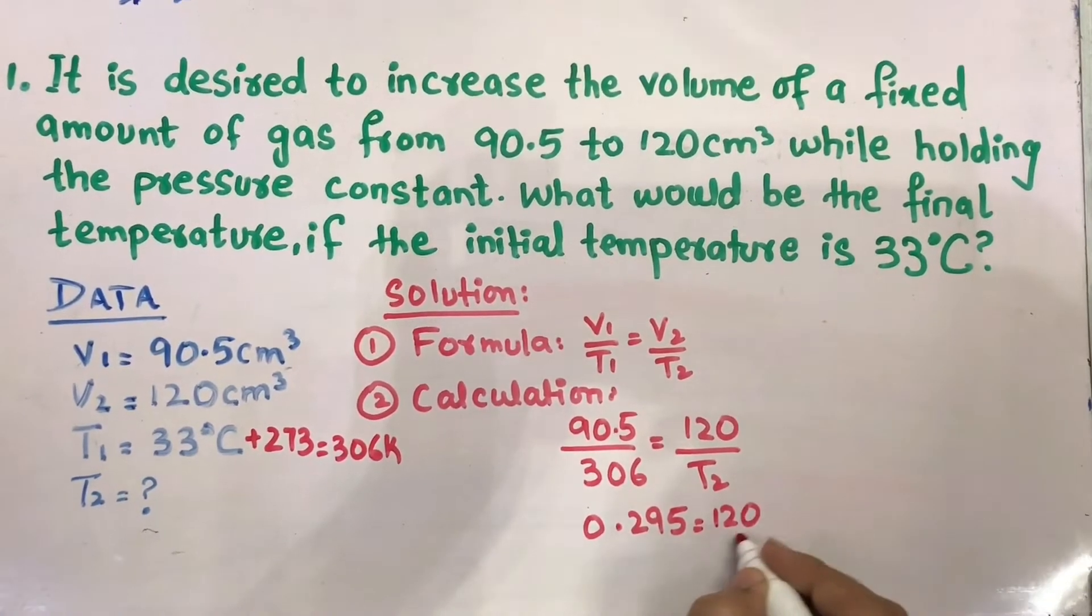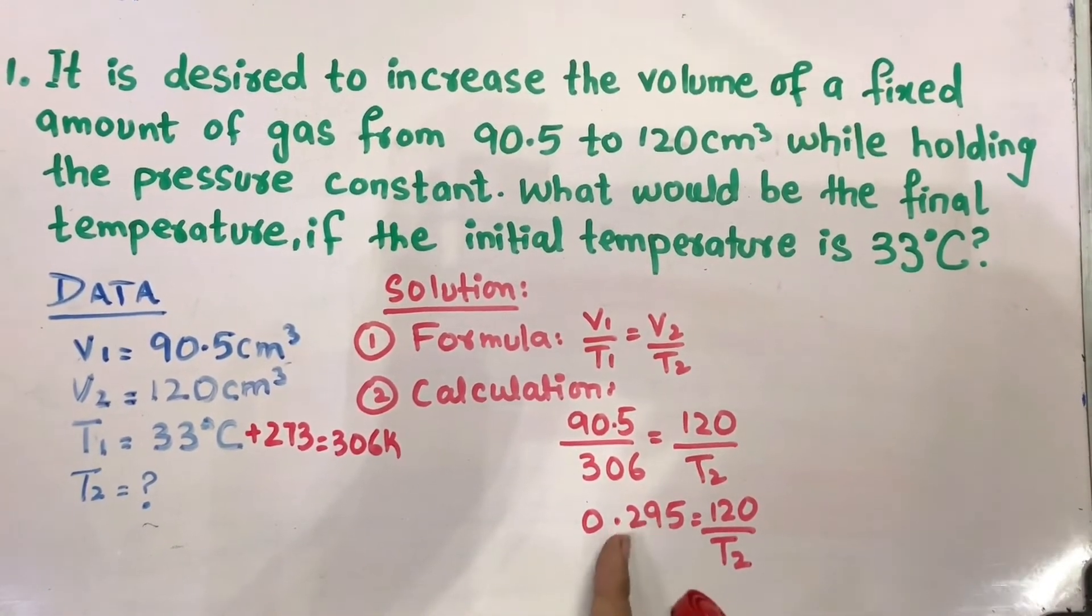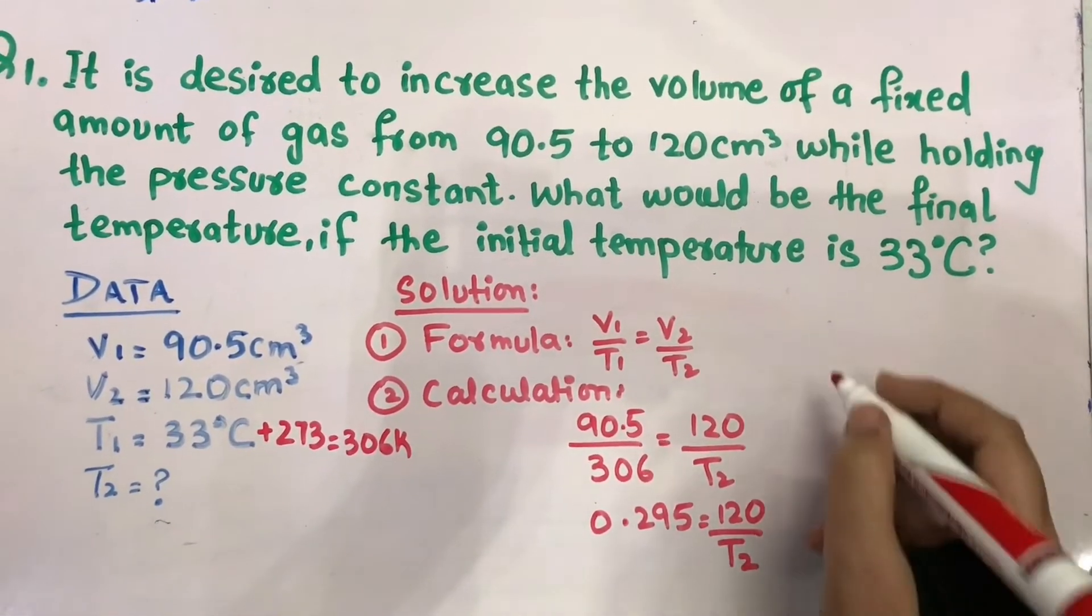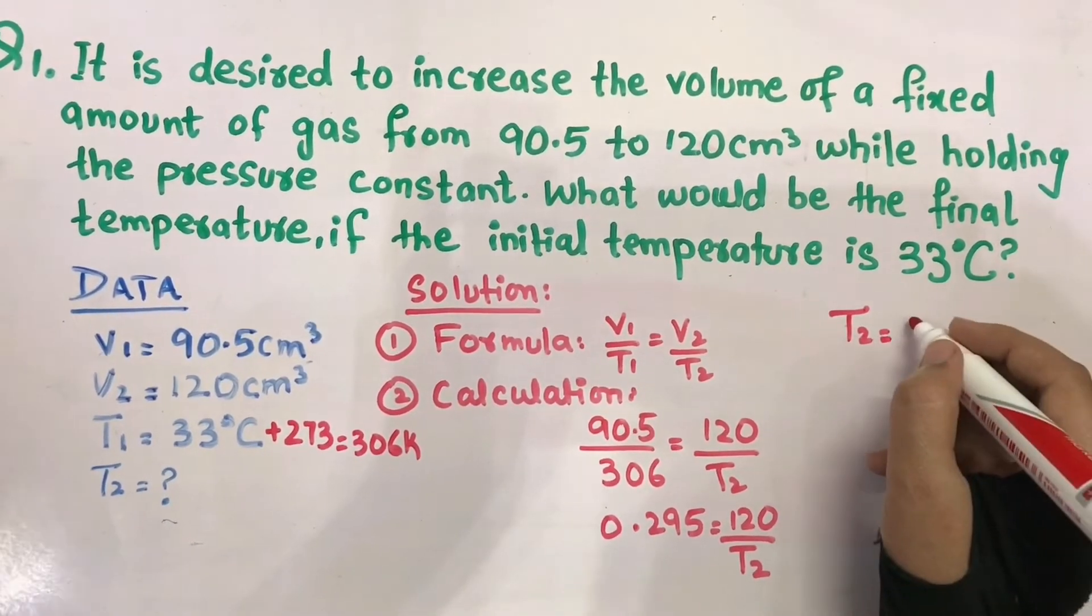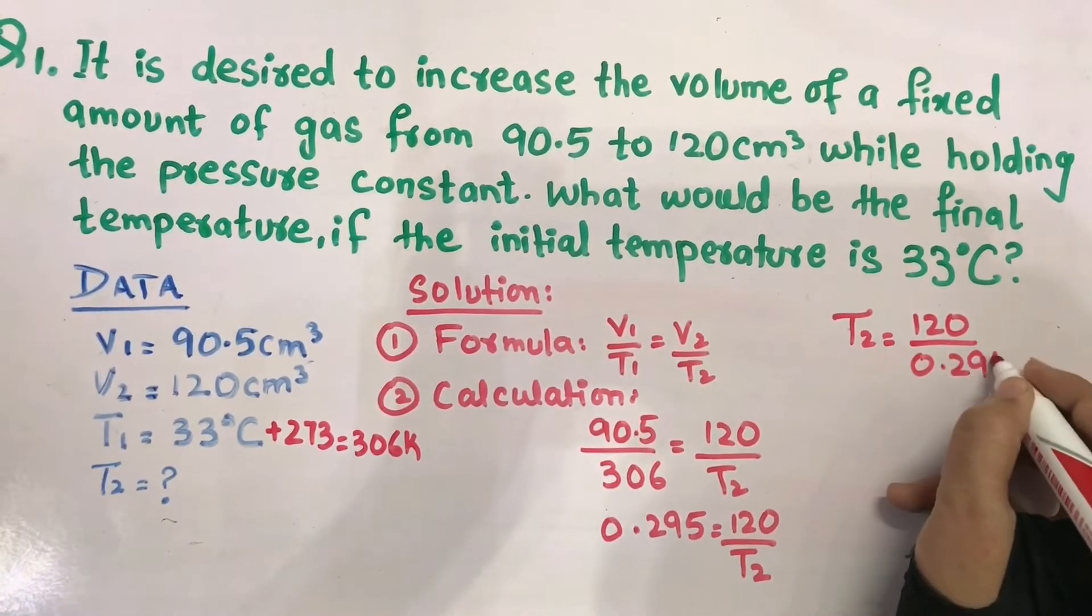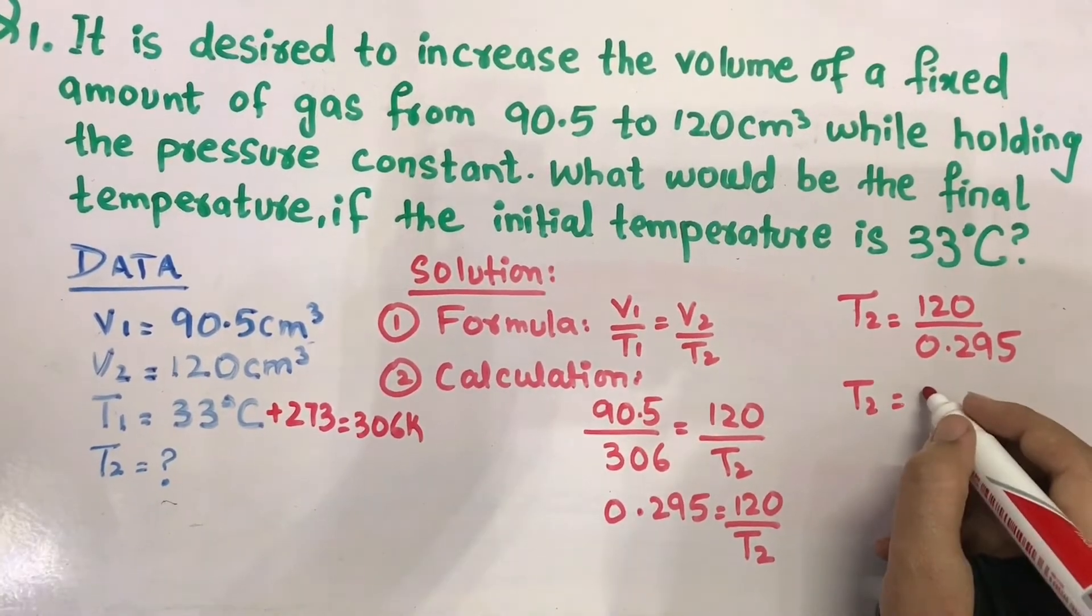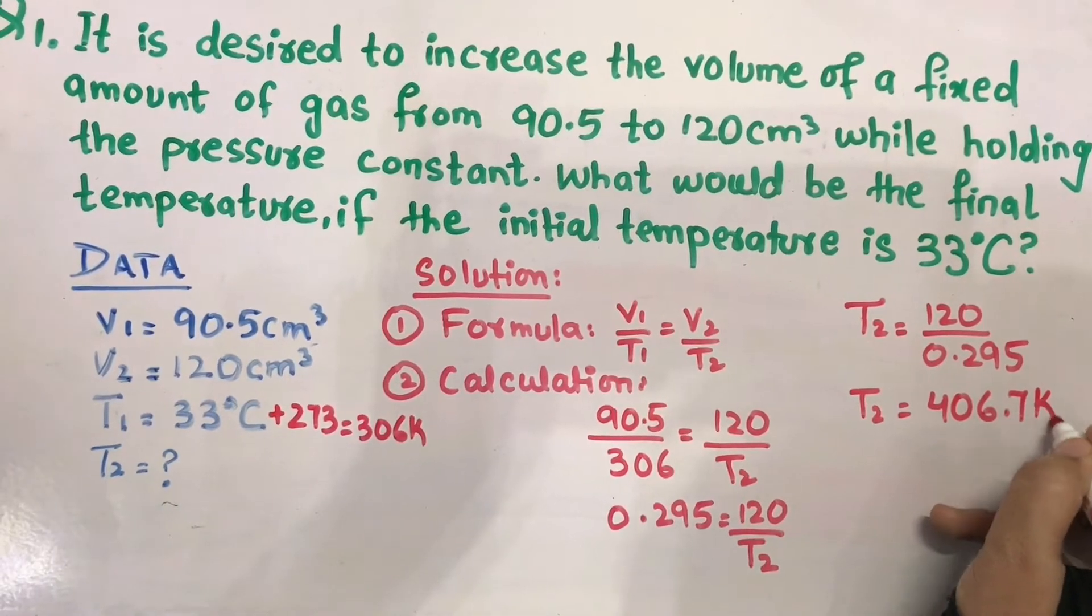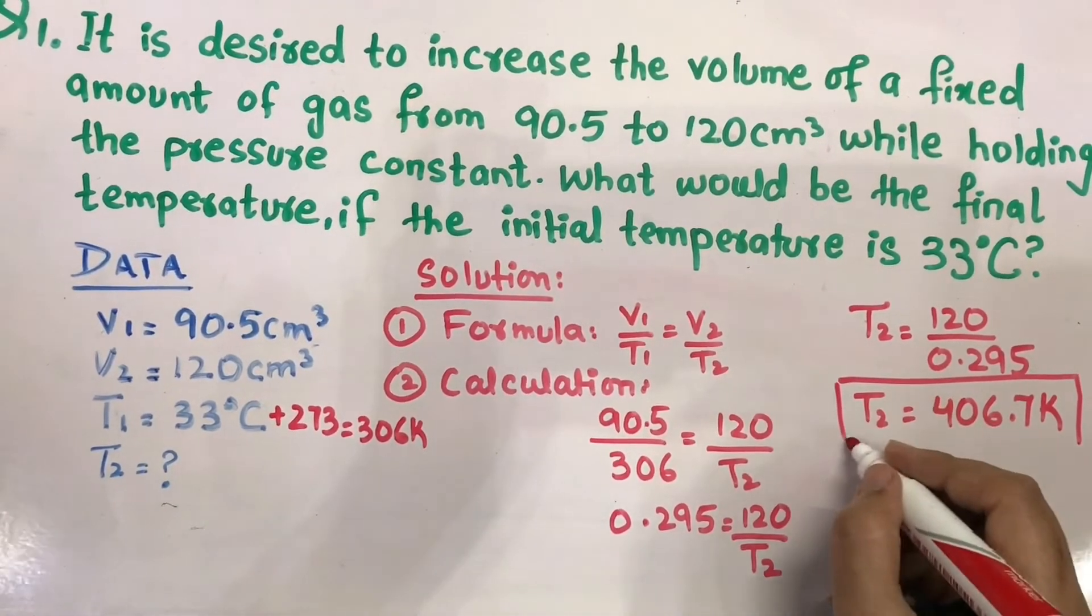First divide both of them, you will have 0.295 equals 120 upon T2. T2 will go and replace. After dividing, you will get 406.7 Kelvin. So this is our final temperature.